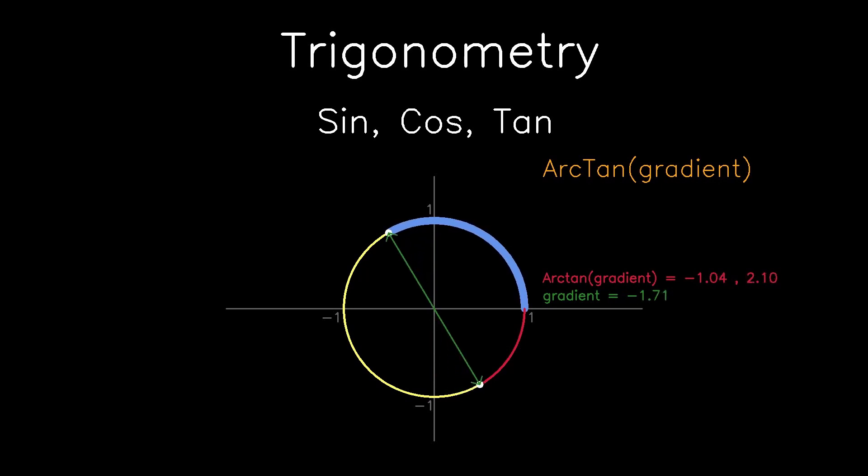Arc tan is a function that takes in the gradient and outputs the arc length. There will always be two solutions where that gradient cuts either side of the unit circle.